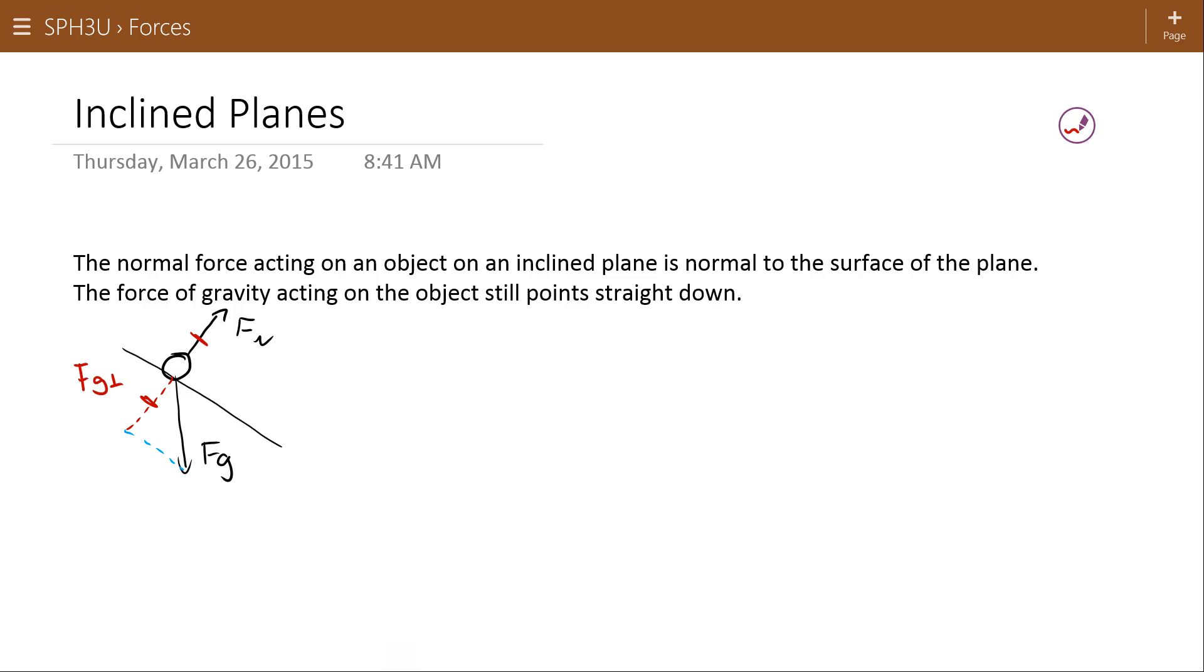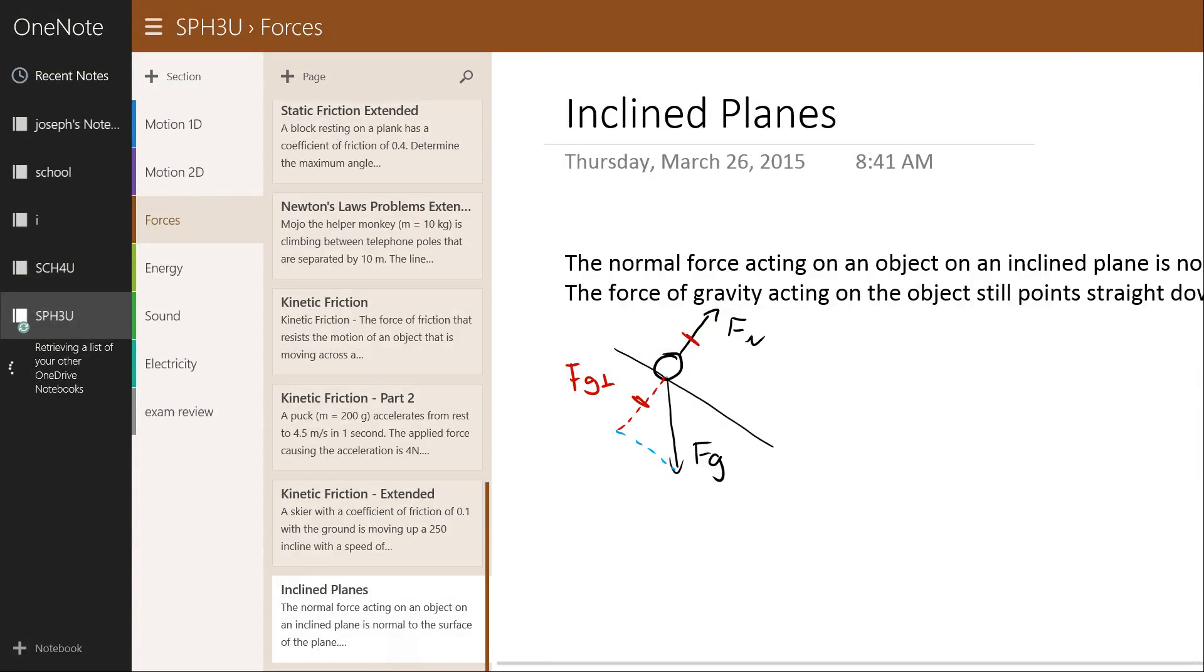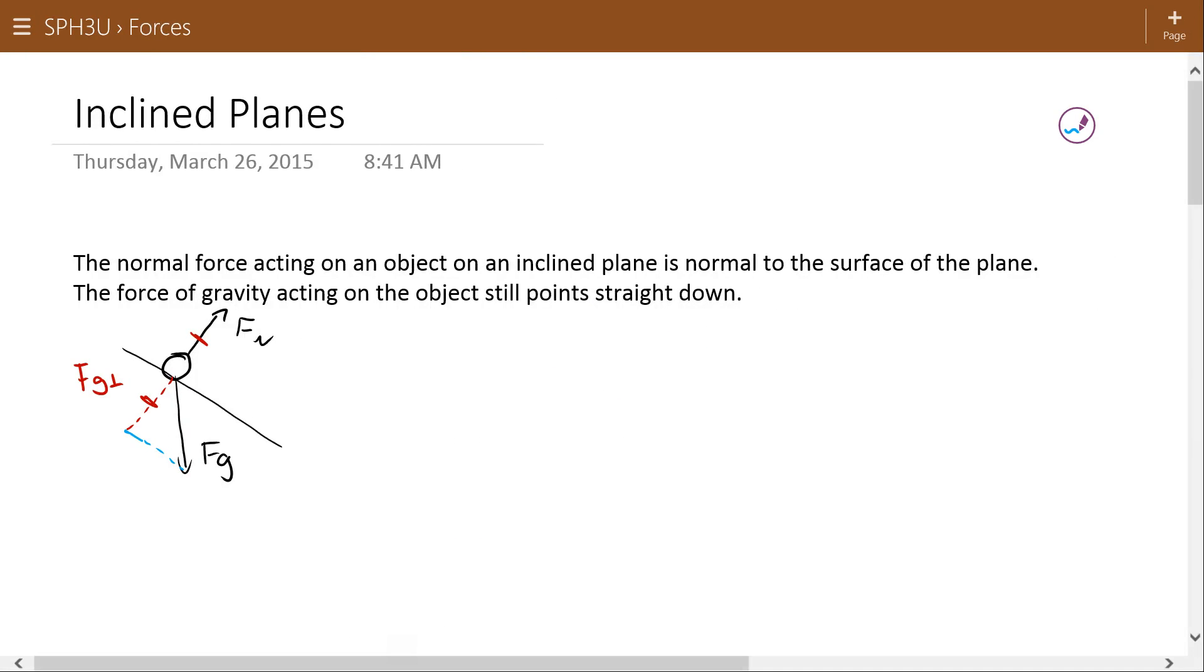Imagine that this force of gravity has two components. There's a component to this force of gravity that is going straight into the plane. And there's a component to this force of gravity that's going down the plane. The normal force and this force of gravity perpendicular are the two parts that are like usual. Those two are equal in magnitude and opposite in direction. They cancel each other out. What's left unaccounted for is this little section of the force of gravity. This is free to cause acceleration. Sometimes this is called FG parallel because that component is parallel to the surface in question.